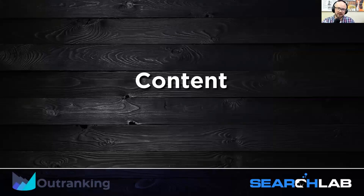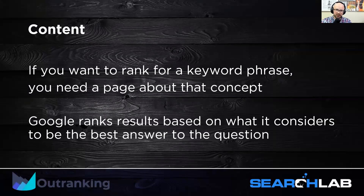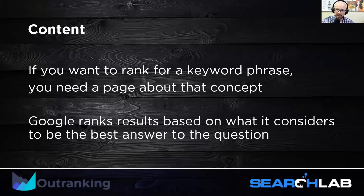Let's talk about content. Content is king — it's one of the most important things for ranking in Google. A few basic facts: if you want to rank for a keyword phrase, you need a particular page about a specific concept. Gone are the days of making very separate pages about very similar keyword phrases. 'Personal injury lawyer' and 'personal injury attorney' are the same concept — that does not merit two separate pages. Google understands those two words are basically the same concept.